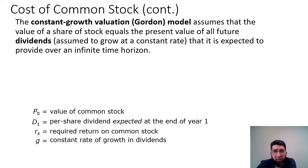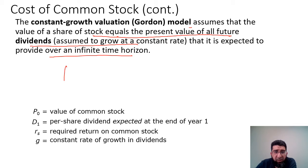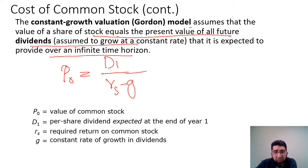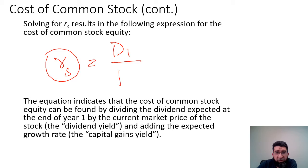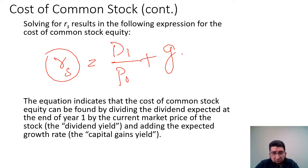This is much like the dividend discount model. The constant growth valuation model works perfectly for calculating the cost of common stock, since it assumes that the value of a share equals the present value of all future dividends over an infinite time horizon. We write it as P0 equals dividend over RS minus G (the Gordon model). To calculate RS we rearrange to get RS equals D1 over P0 plus G.